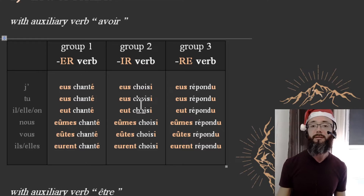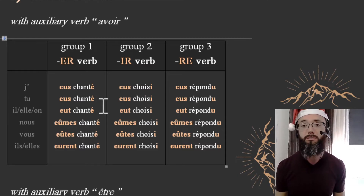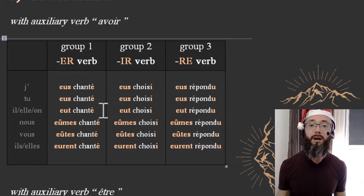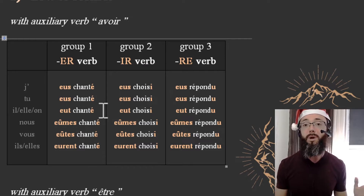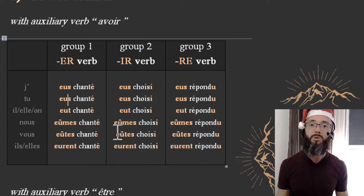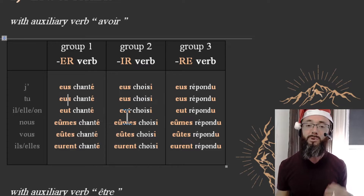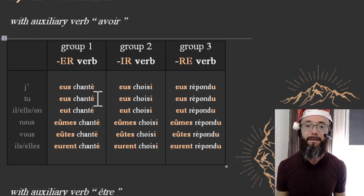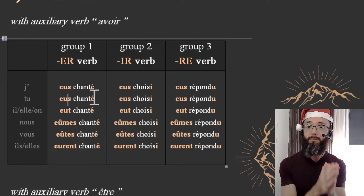J'eus chanté — I had sung. Tu eus chanté — you had sung. Il/elle eut chanté — he/she had sung. Nous eûmes chanté. Vous eûtes chanté. Ils/elles eurent chanté. This is for group one — every time the same auxiliary verb AVOIR conjugated in the passé simple, forming the passé antérieur.